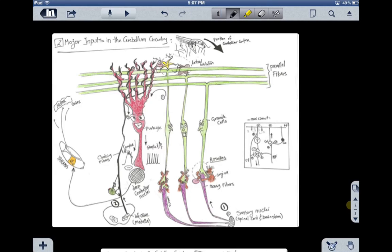As you can see here, we're zooming in on this fold of the cerebellum, and we'll be talking about major inputs that project to the cerebellum. We have two major inputs. The first input is from the sensory nuclei in the spinal cord. The second input is from the inferior olive of the medulla.